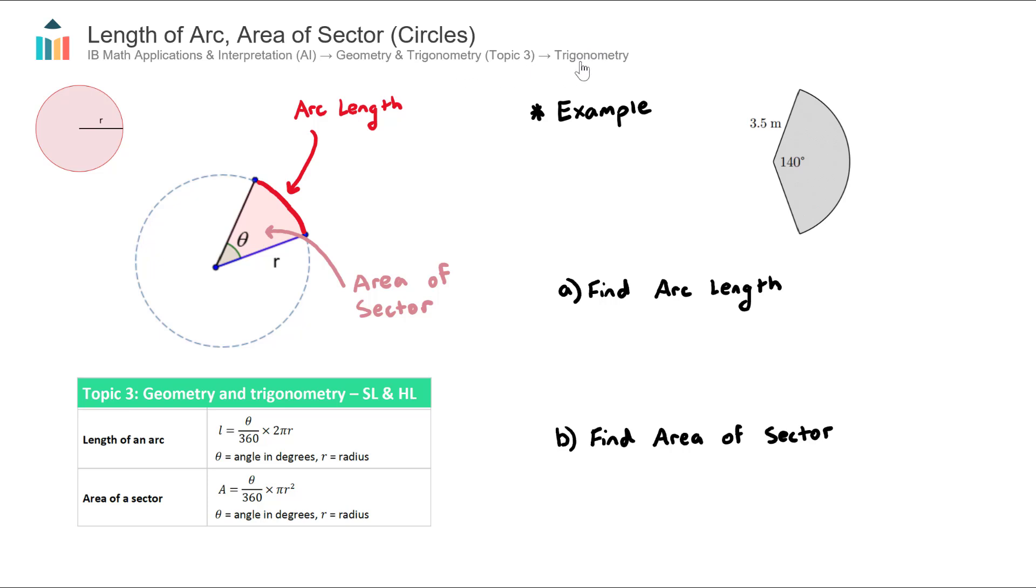Usually when you're thinking about trigonometry you're thinking about triangles, however this particular portion we're actually looking at circles - not full circles, but parts of circles called sectors. When we have a full circle we're interested in the area or circumference, and the main characteristic is the radius.